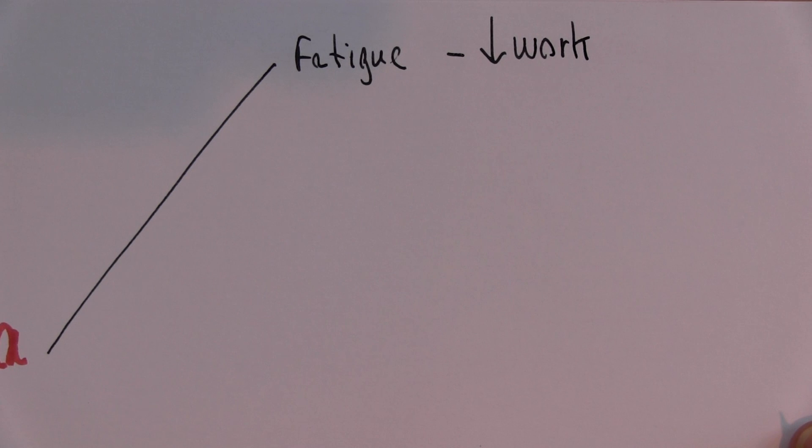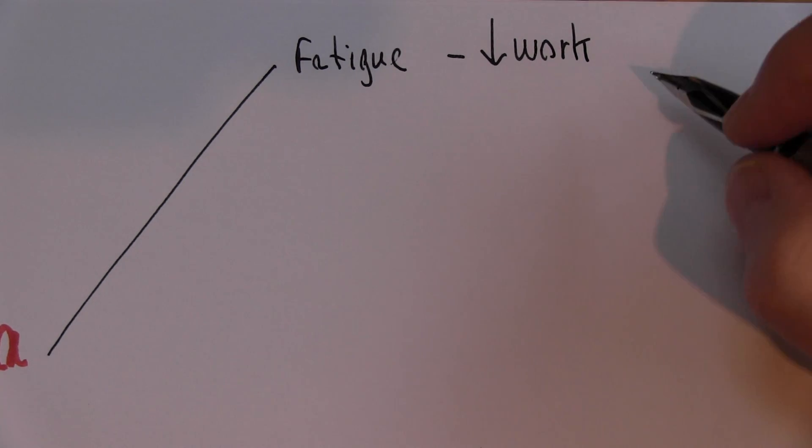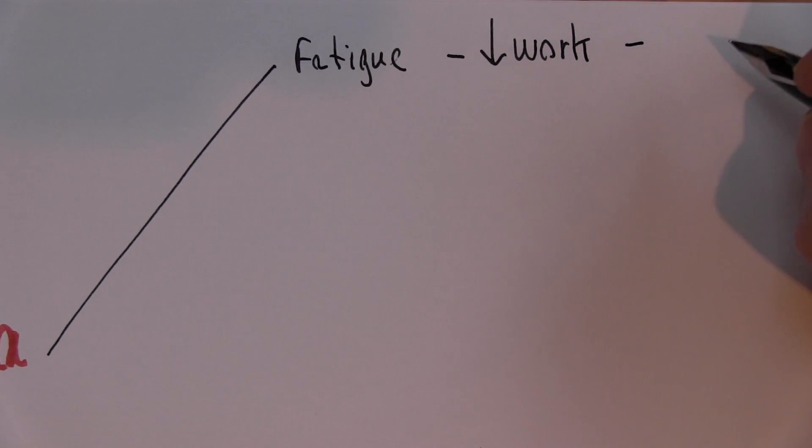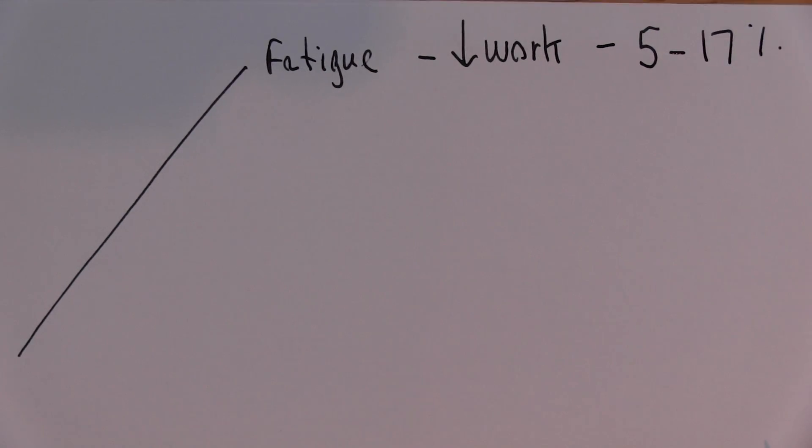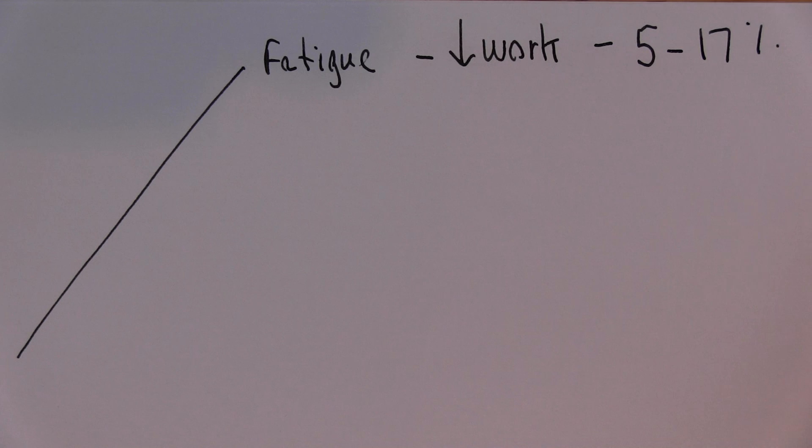Studies have shown that if we correct the anemia, that's going to increase the workload by between 5 and 17%. Just by correcting anemia, people could grow 5 to 17% more food. It's a significant difference.